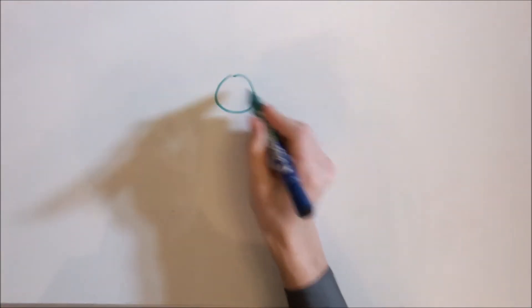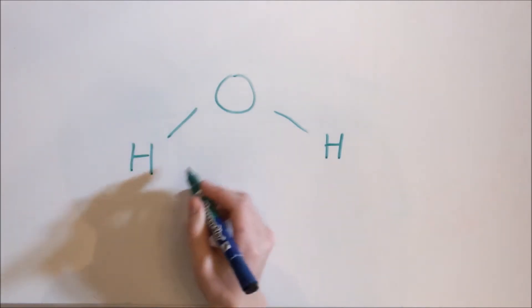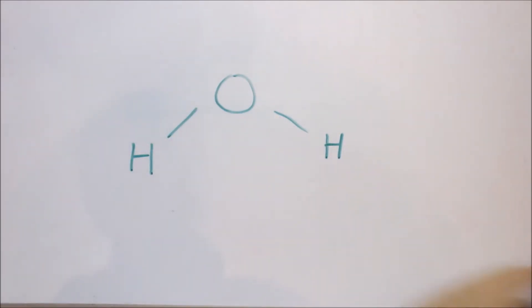Water is made of one oxygen atom and two hydrogen atoms. These atoms are held together by two bonds, each consisting of a pair of shared electrons, shown here by the blue tack.